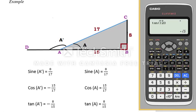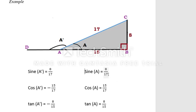Angle A is inside the triangle and is the acute angle; the angle on the left-hand side is the obtuse angle. Sine of angle A — as this is a right-angle triangle — will be perpendicular over hypotenuse, which is 8 over 17. We already learned that the sine of the acute and obtuse angle have the same numerical ratio and the same positive sign, so sine of A dash is also 8/17.